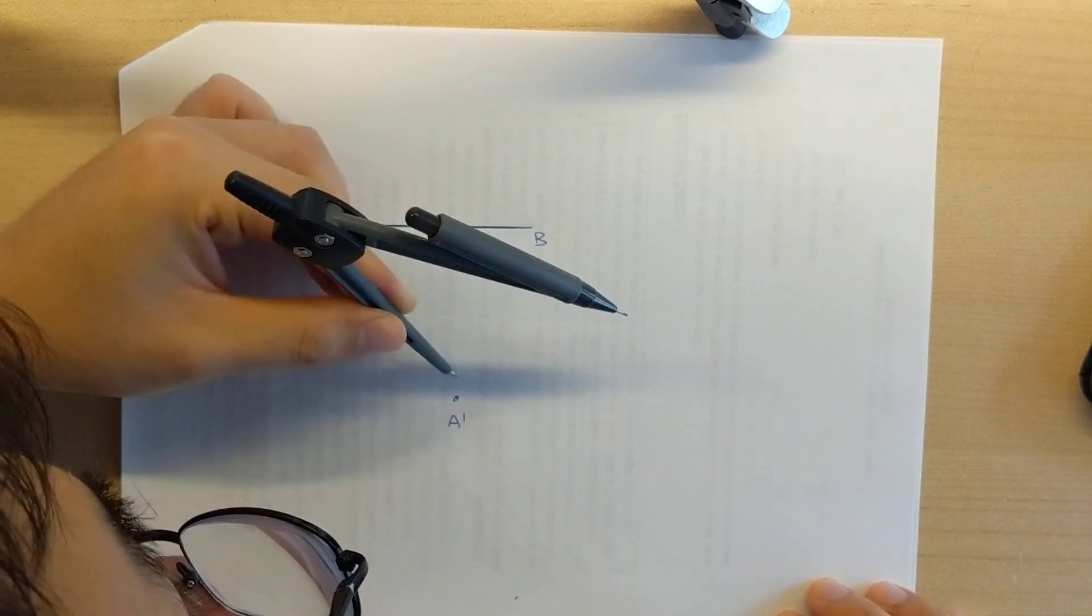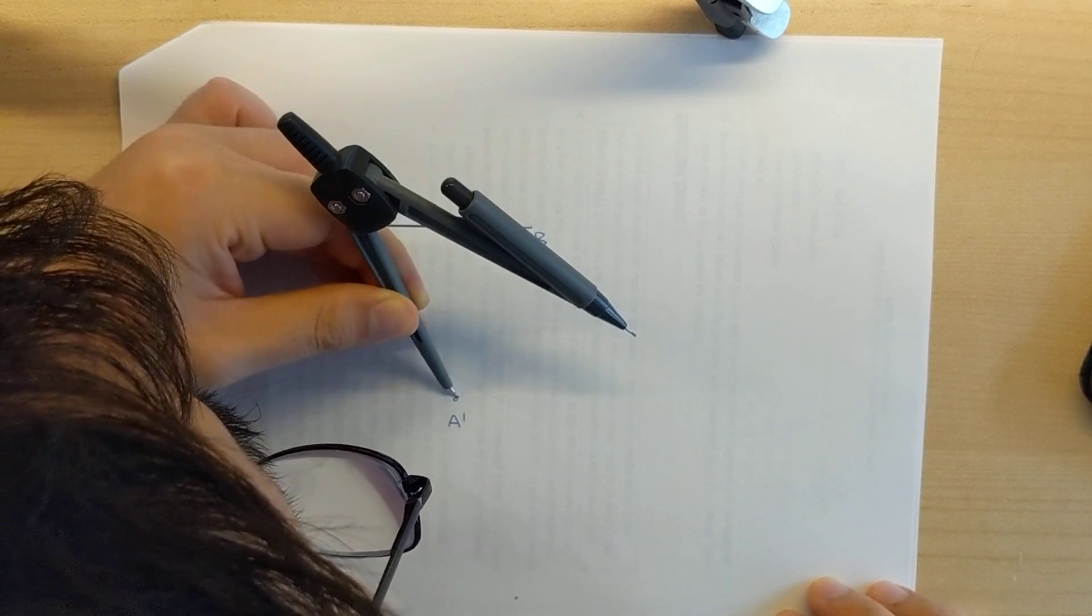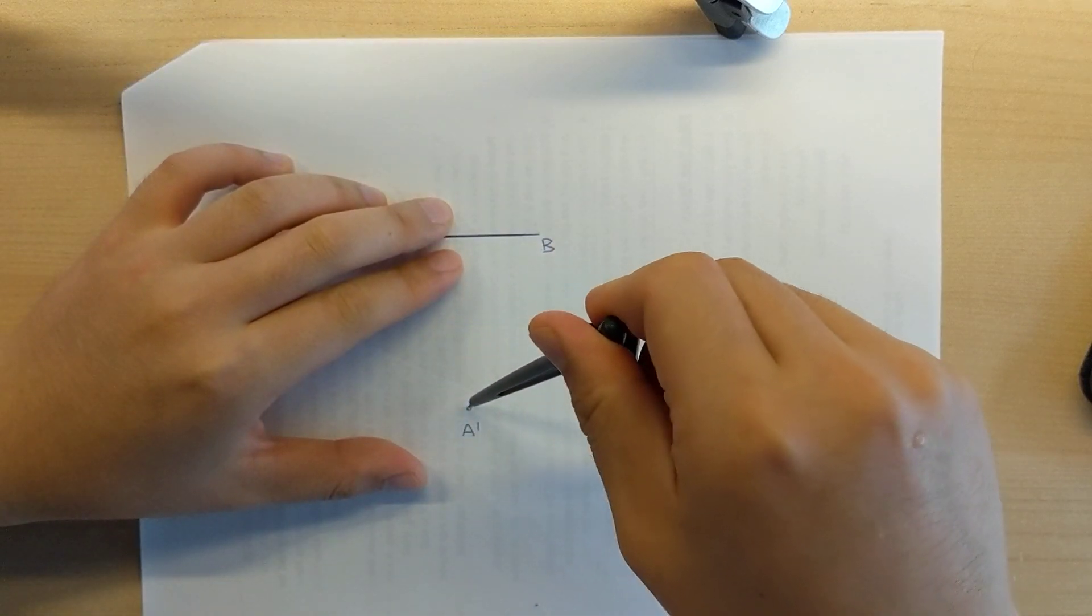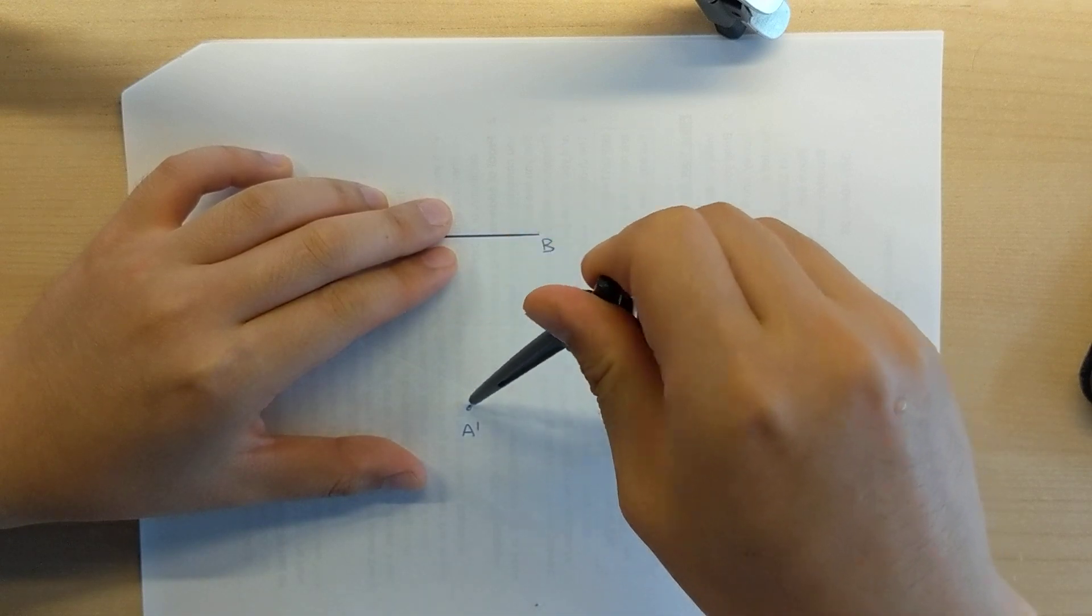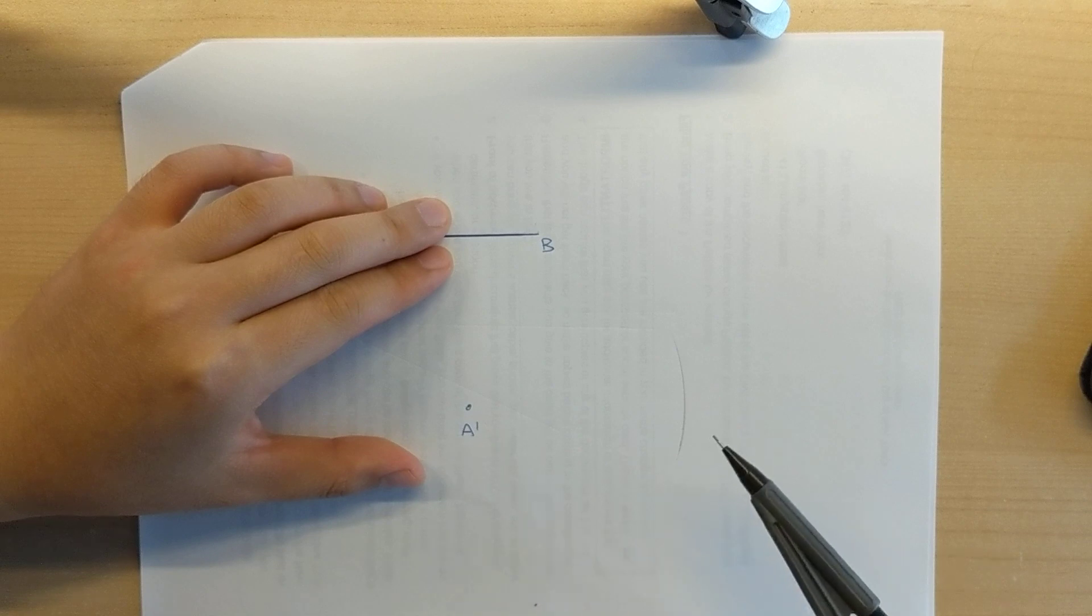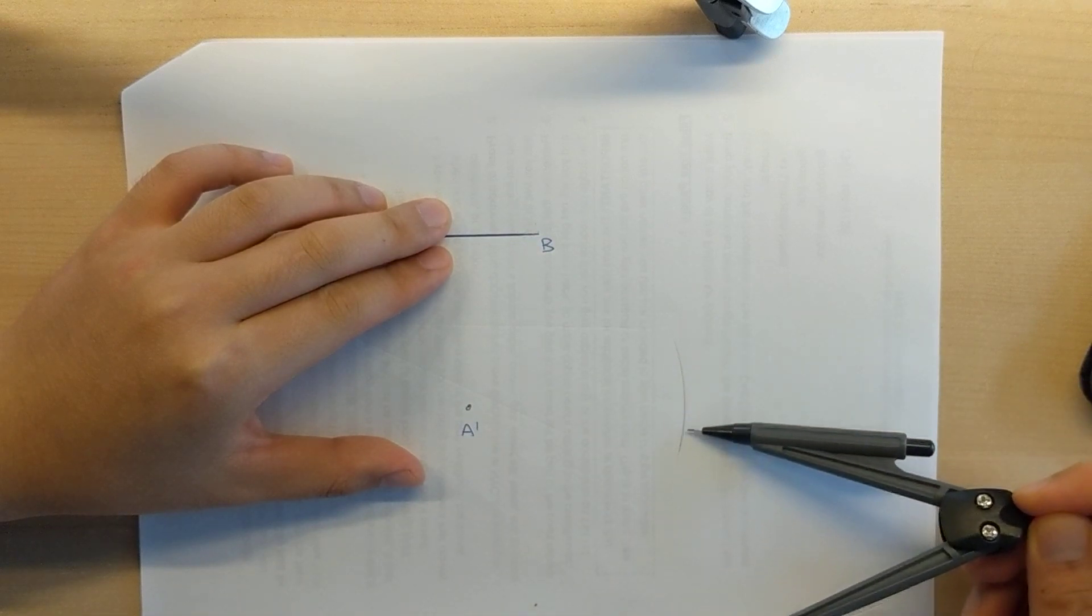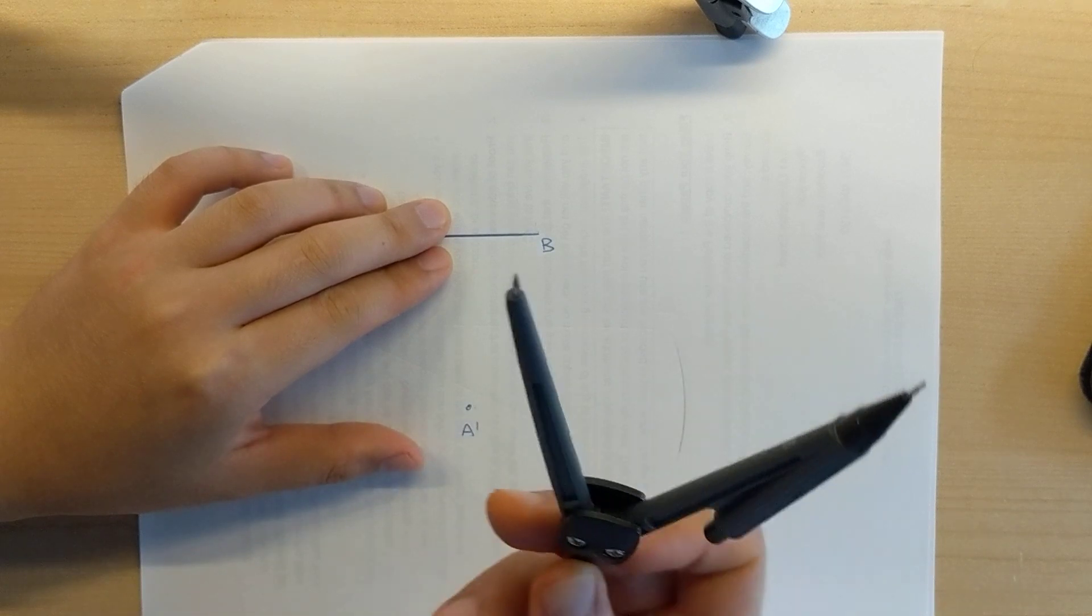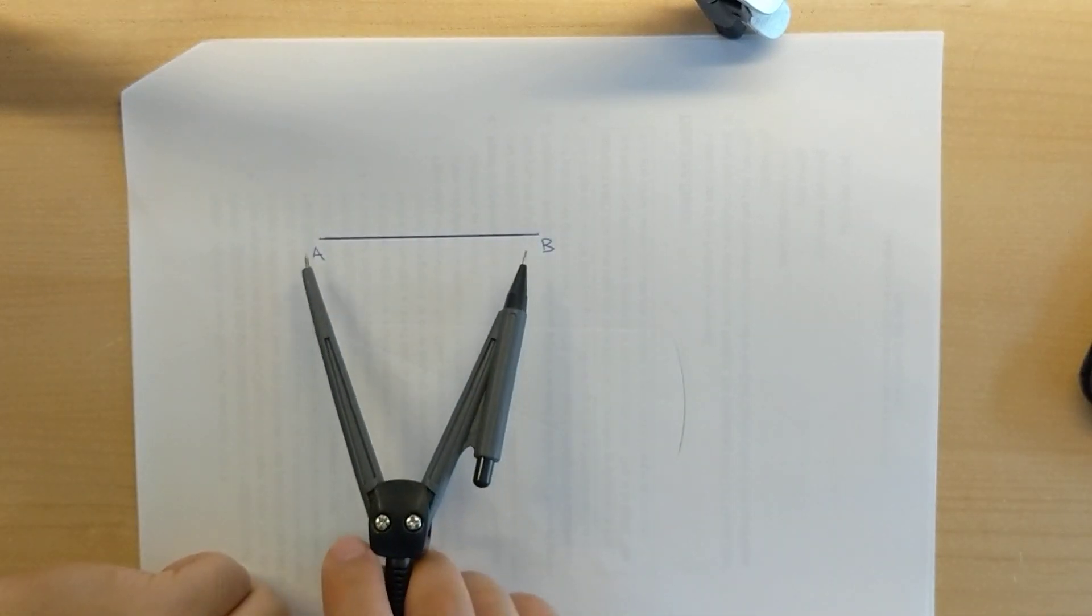And what I'm going to do is I'm going to place my pin on A prime and I'm going to draw myself an arc. So the distance from any point on the arc to point A prime is going to be the same length as the length of line AB.